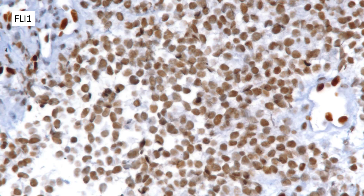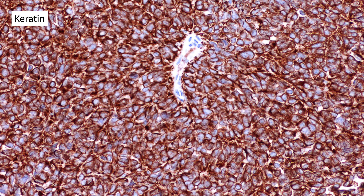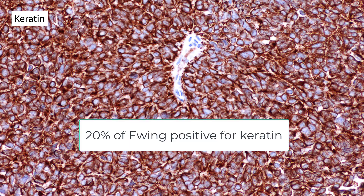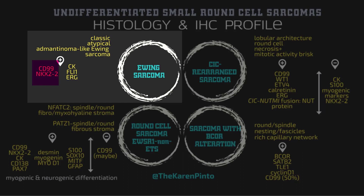Regarding FLI1: since the EWSR1-FLI1 fusion is the most common, in most cases of Ewing's you do see strong nuclear reactivity with FLI1. However, it is not a very specific antibody, so I prefer not to use it at all. One major pitfall to remember: about 20% of cases of Ewing's sarcoma can be positive for keratin — and I'm not even talking about adamantinoma-like Ewing's. Do not let this stain lead you to call something a carcinoma. Quick summary: Ewing's sarcoma is a round cell tumor with diffuse CD99 reactivity and diffuse strong nuclear NKX2.2 reactivity.